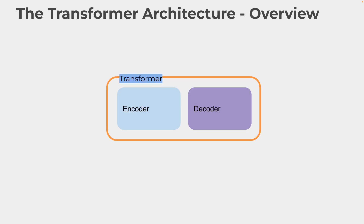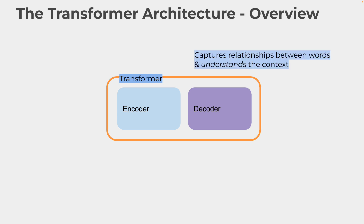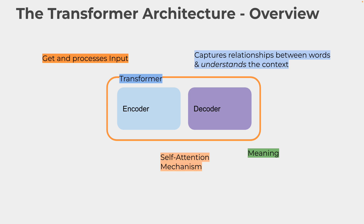The key words to capture from the transformer architecture overview are: it captures relationships between words and understands context — just like you and I understand context when talking to somebody, reading, or listening to something. The main keywords are: get and process input, understand and find meaning, look at semantics via the self-attention mechanism, and context. Those are the main keywords, along with input, output, and training.